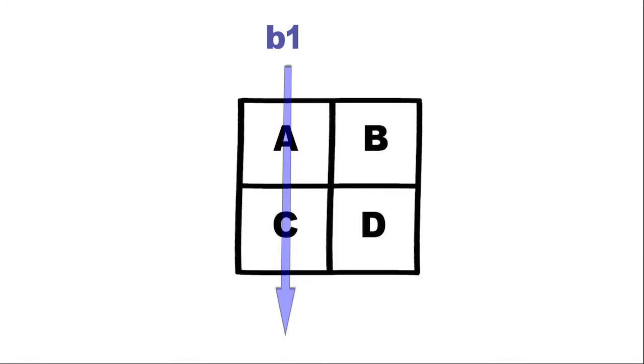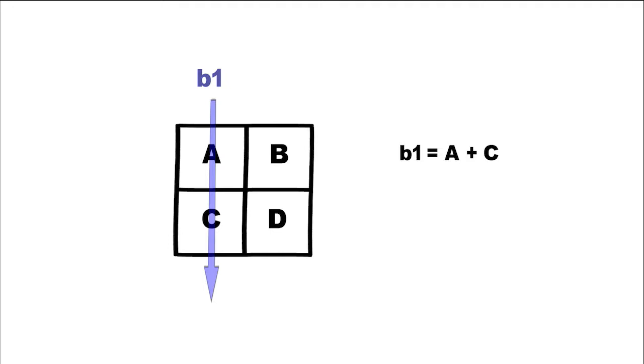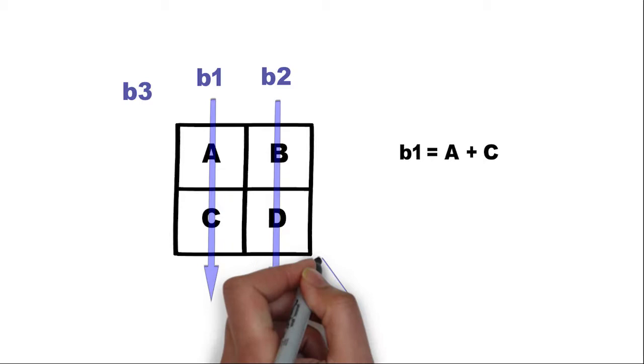To fully determine the values of a, b, c, and d, we need to have an equal number of bolometers, in this case 4, and each detector must cross a different combination of pixels. For example, we can define b2, b3, and b4. If we do this, the problem becomes just an inversion of a system of equations, which is easily solvable.